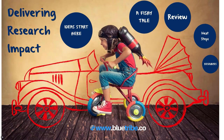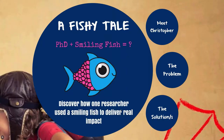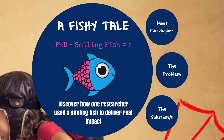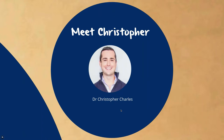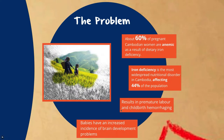Let's look at a case study. A PhD researcher used a smiling fish to deliver positive impact for communities in Cambodia. This is Christopher Charles, who received a scholarship to work with NGOs in Cambodia for a year prior to his PhD. One of the biggest problems in Cambodia's health system is that 60% of pregnant women are anemic because they don't have enough iron in their diet — the most widespread nutritional disorder, affecting 44% of the population. The consequences include hemorrhage during childbirth, premature labour, and ongoing health impacts on children.